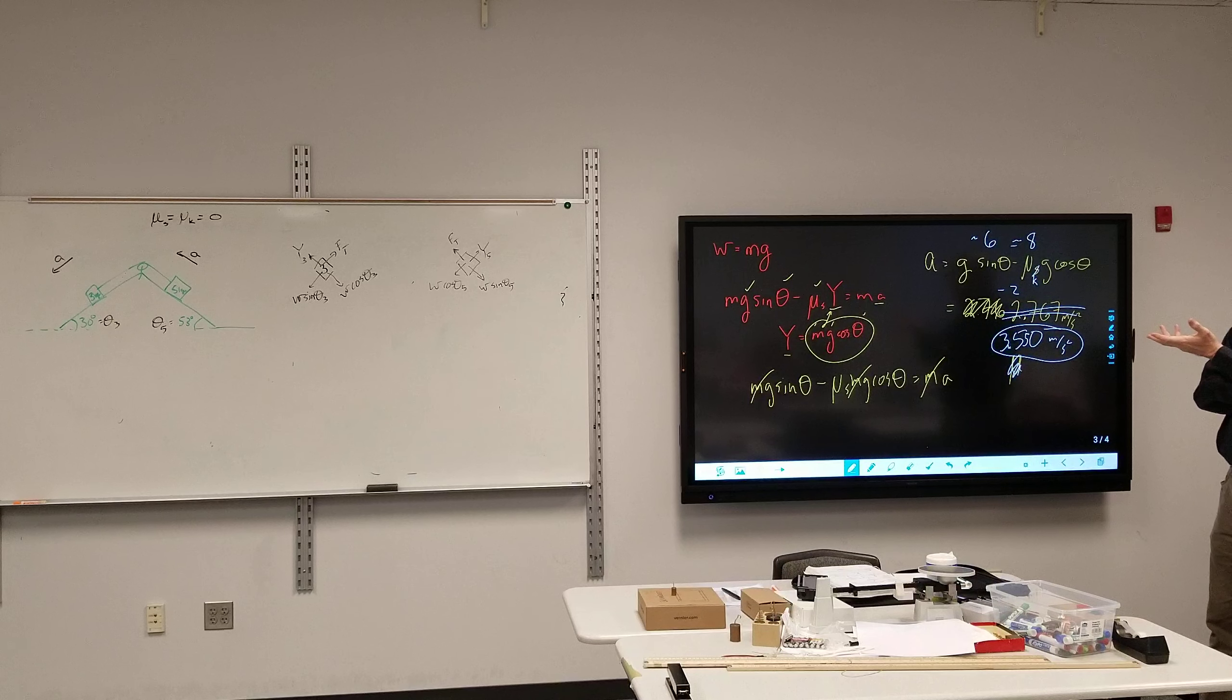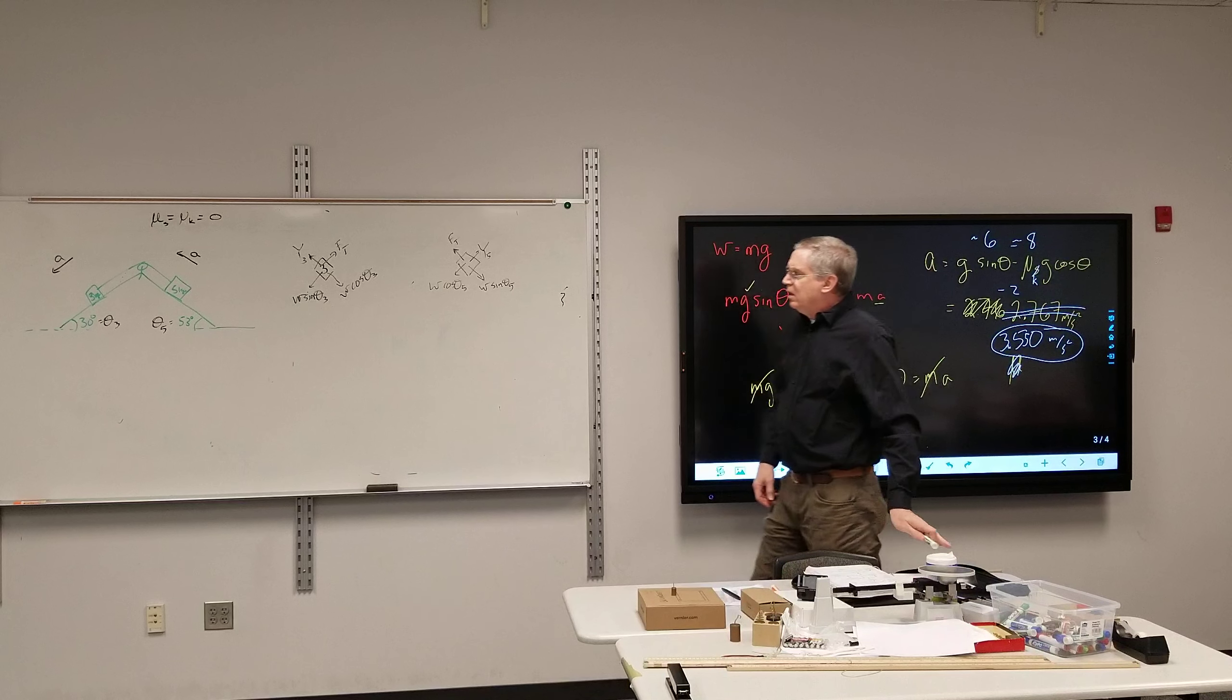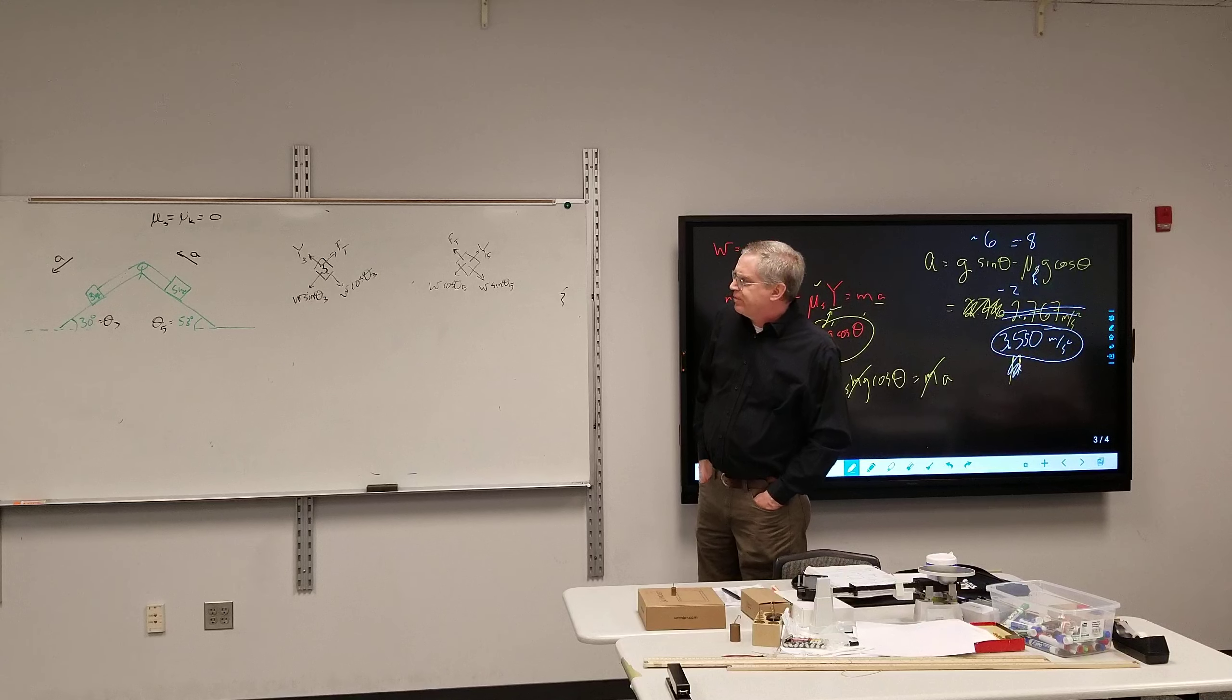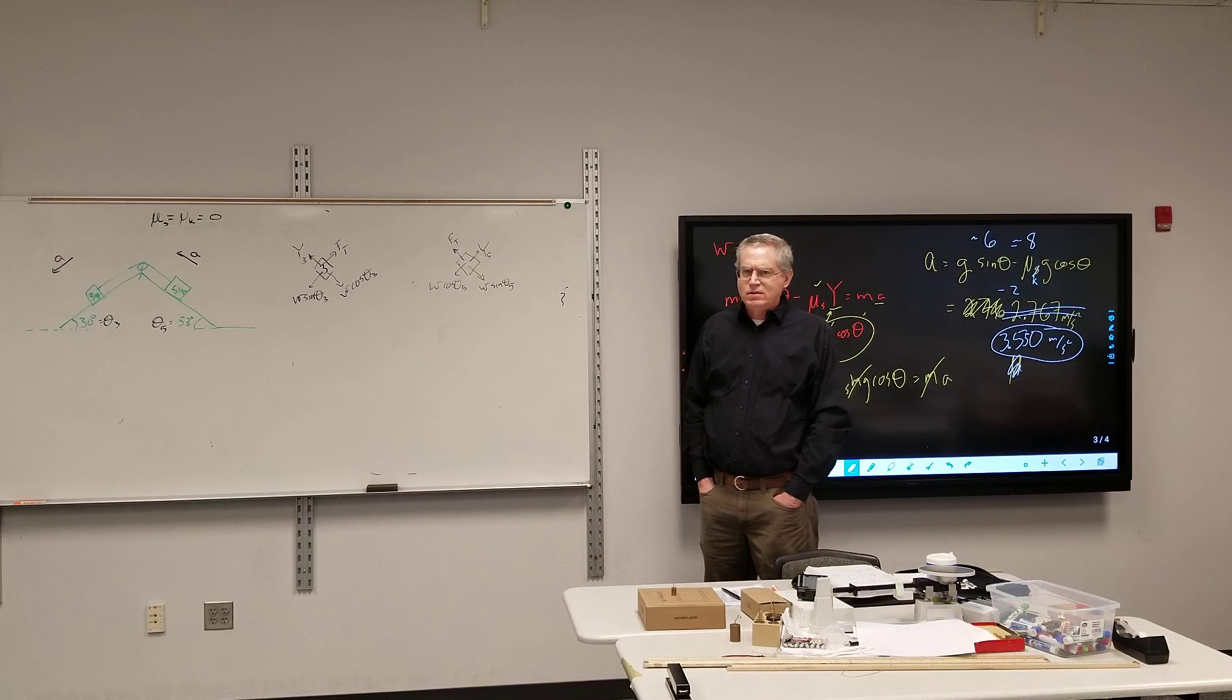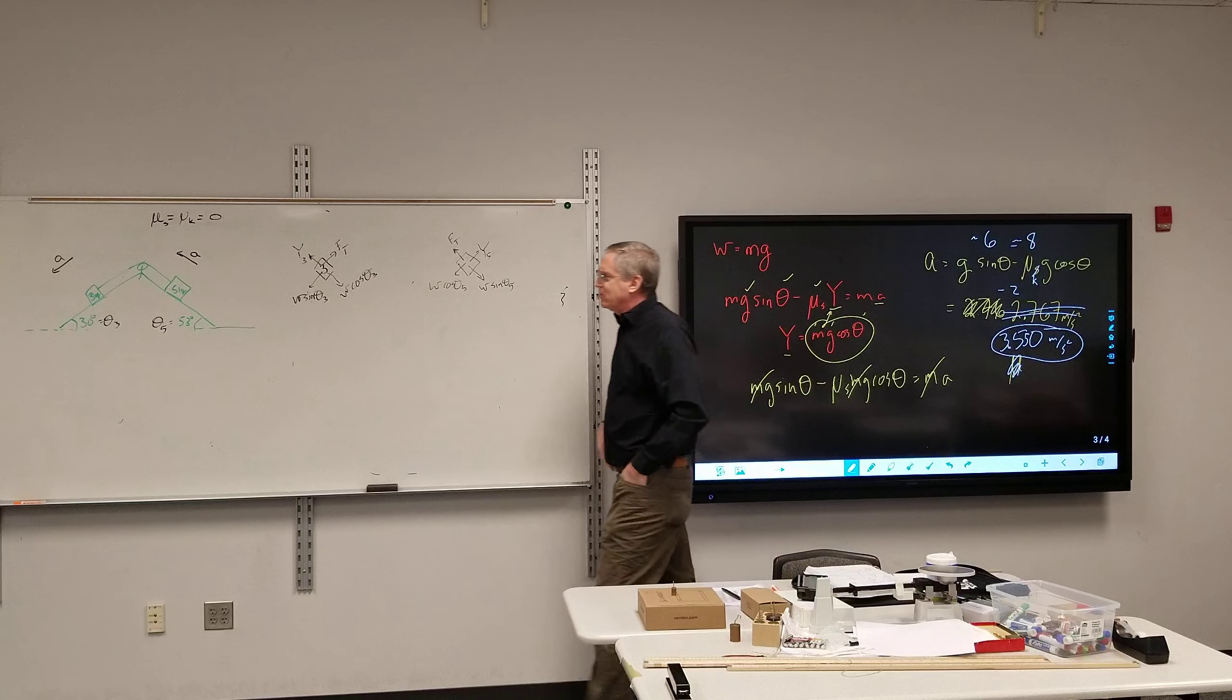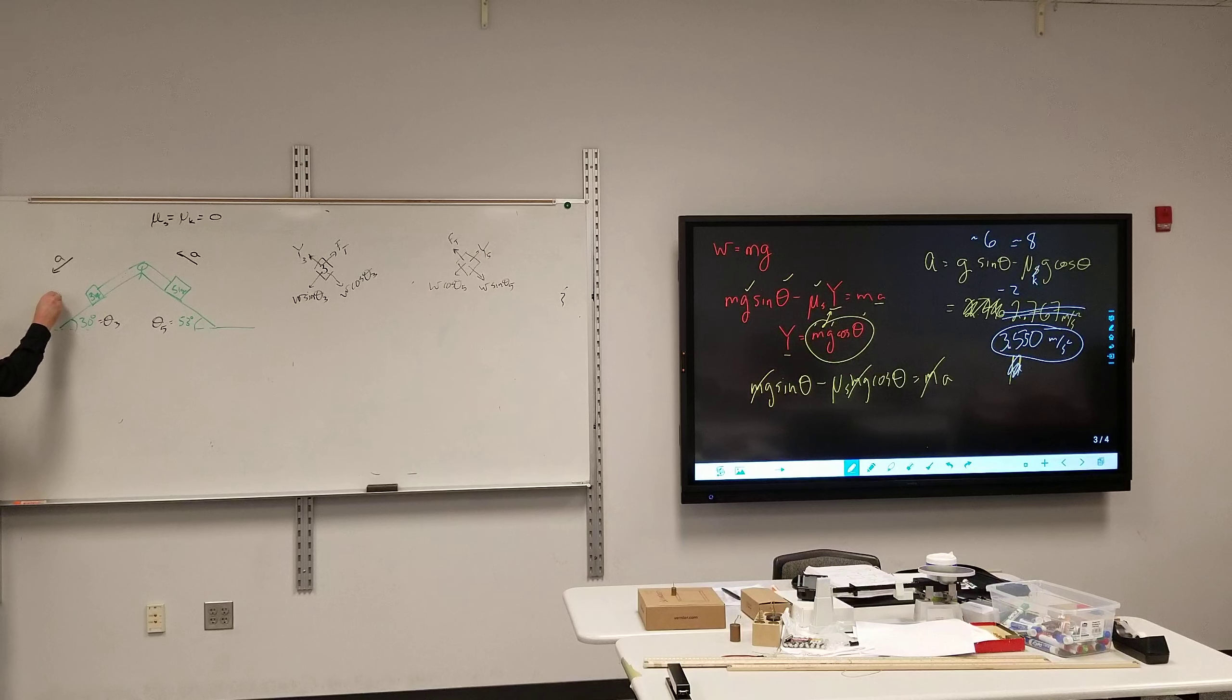I'll call this theta 5, W cosine theta 3, tension, and normal force. And for the 5 kilogram mass, we have tension, W. I'll do that again. We'll call that Y3, Y5, W cosine theta 5, and W sine.